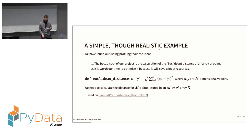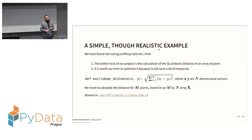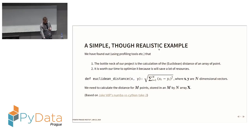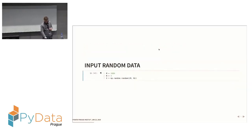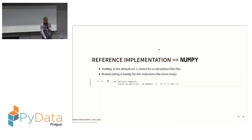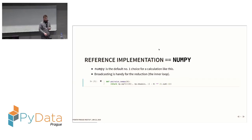The test example I'm using — actually borrowed from Jake VanderPlas's talk — is a Euclidean distance calculation on a set of vectors. We are at the point where we've found this to be the bottleneck of our business, so let's try to optimize it. I'll start with some random data as input, which I'll use throughout the presentation to demonstrate performance.